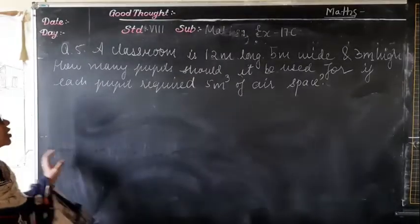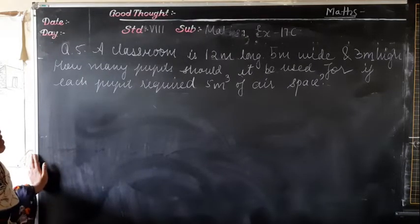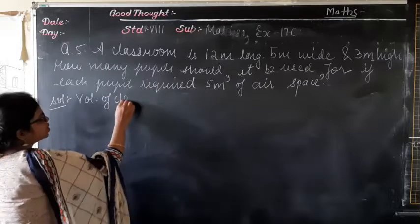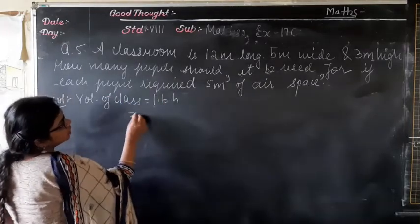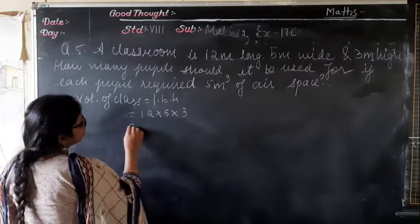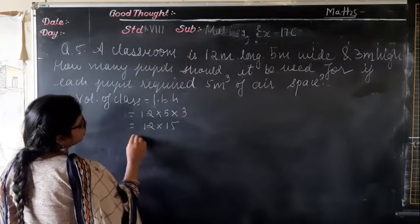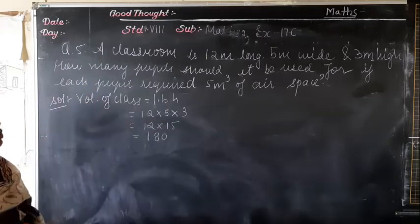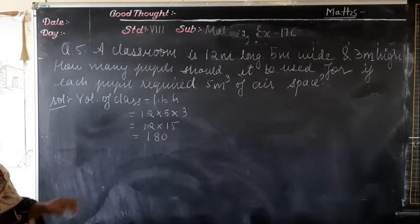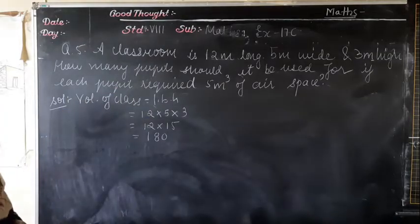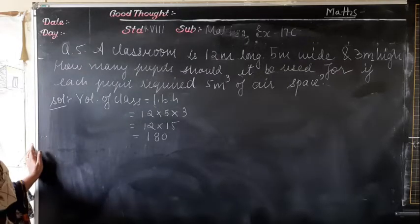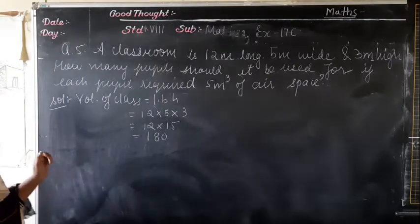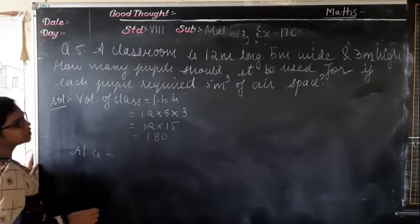Question number 5: A classroom is 12 meters long, 5 meters wide, and 3 meters high. From here we can find the volume of the classroom. Volume of classroom = L × B × H = 12 × 5 × 3.